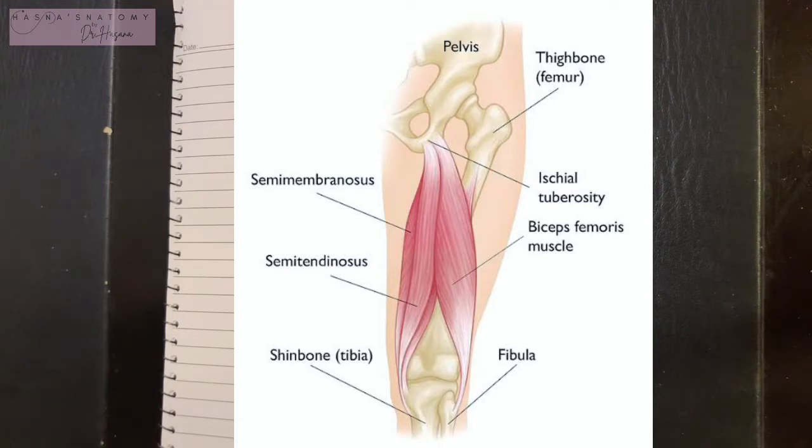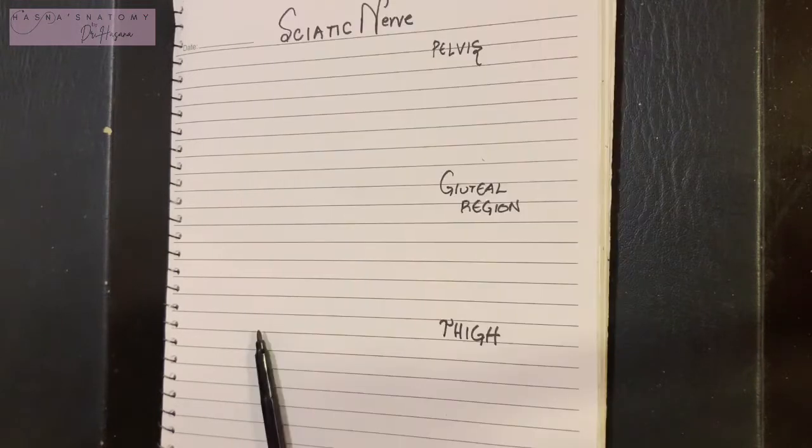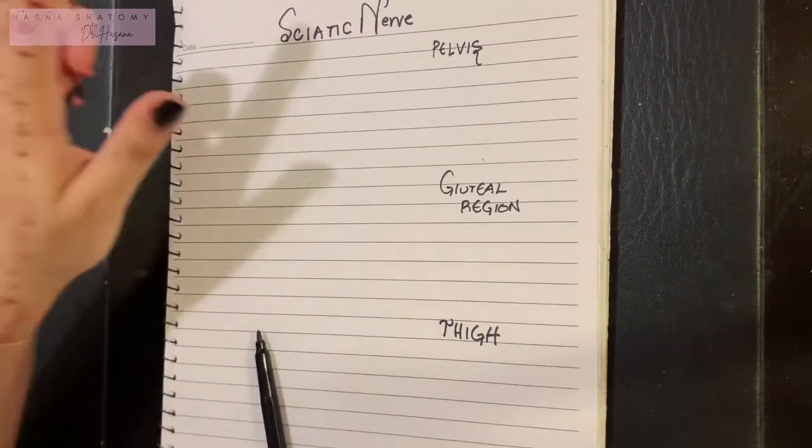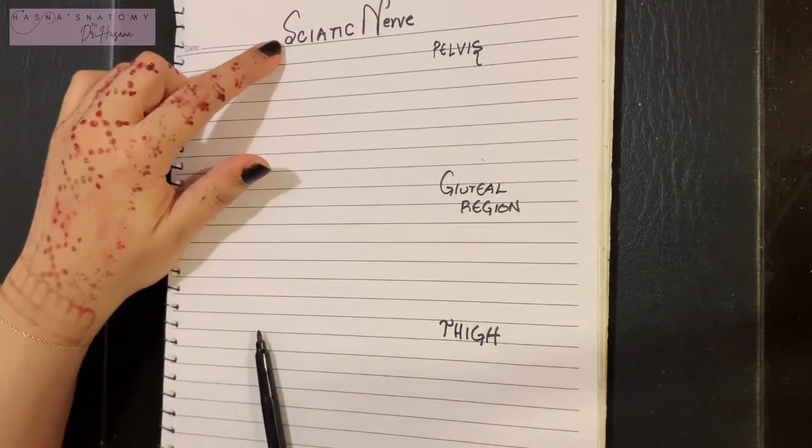The hamstring muscles basically consist of four muscles: the semitendinosus, semimembranosus, biceps femoris, and adductor magnus. These muscles will be discussed in a separate video. The most important part of the back of the thigh is the sciatic nerve.